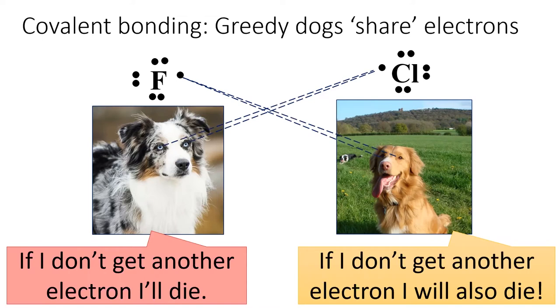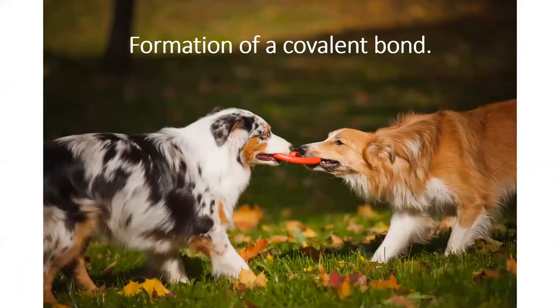There is nothing that a halogen wants more than one more electron to complete its octet. Each dog notices that the other dog has a single unpaired electron. And they think, hmm, you know, that could be my electron. So, they form a covalent bond.